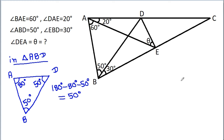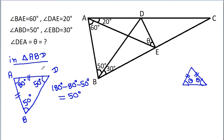Also, in triangle ABD, if these two angles are equal — both are 50 degrees — then the sides opposite to them will also be equal. So AB will be equal to AD.